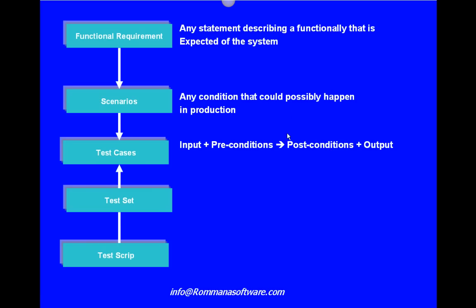By taking one test case and changing either the input or the preconditions, you can produce other test cases with different post conditions and outputs. The difference between one test case and another lies in the difference in input or precondition, and as a result, a difference in post condition or output. This way you can create a larger number of test cases for the same scenario. Once you have a group of test cases that are similar — and you know those test cases could be executed using the same steps, because canceling an order follows the same steps regardless of whether it's refundable or not — you cluster them together into a test set.